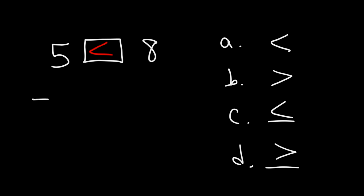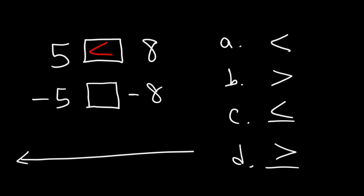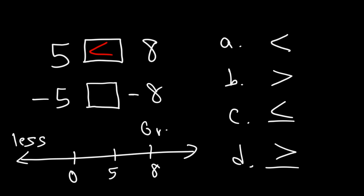Now what if we reverse the situation? Let's say we use negative 5 and negative 8. To understand this, let's think about 5 and 8 on a number line. 5 is to the left of 8. On the left side values are lower; on the right side numbers have a higher or greater value. So 5 is less than 8, and we use the less than symbol.